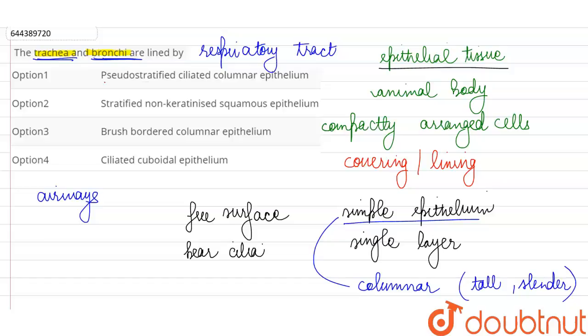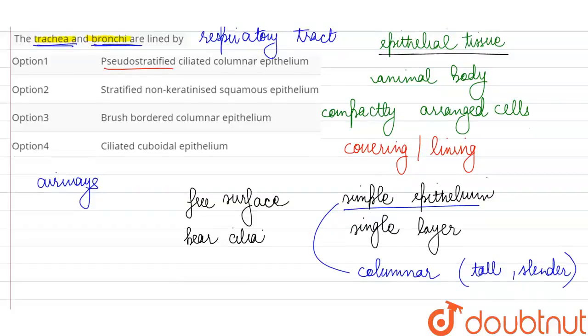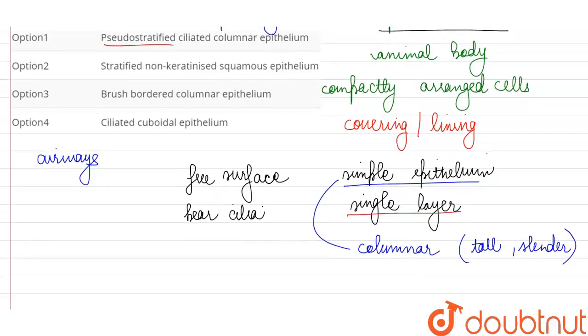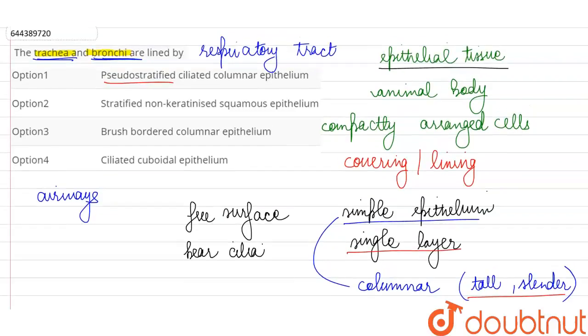...a pseudo stratified epithelium. Pseudo stratified means that actually there's just a single layer, but because of the tall cylindrical cells it is appearing like a compound epithelium, it is appearing like there is more than one layer. So it is a pseudo stratified ciliated epithelium.